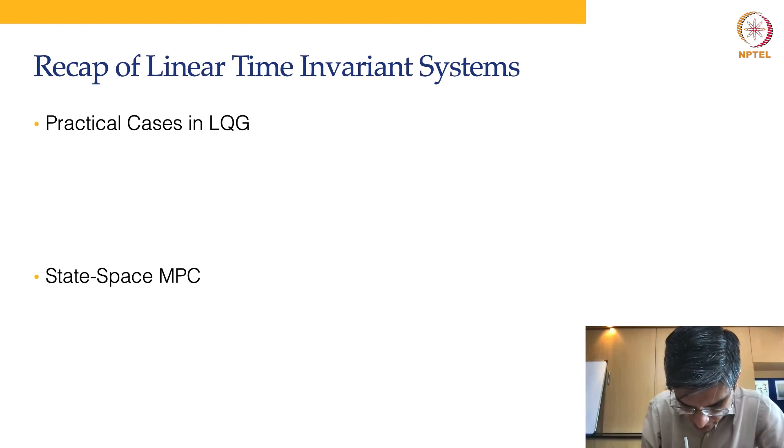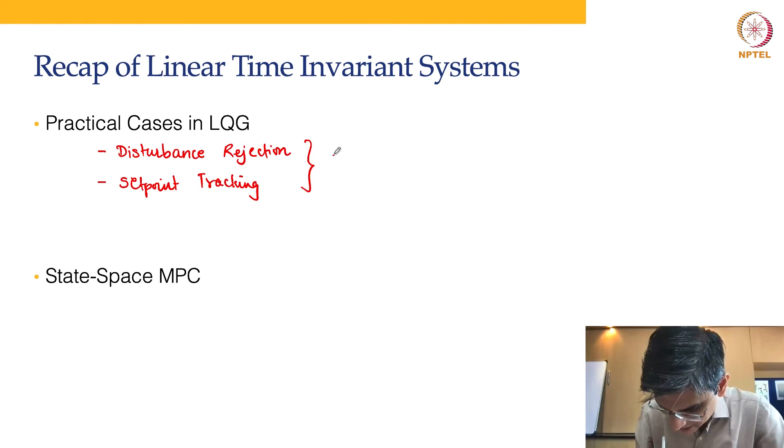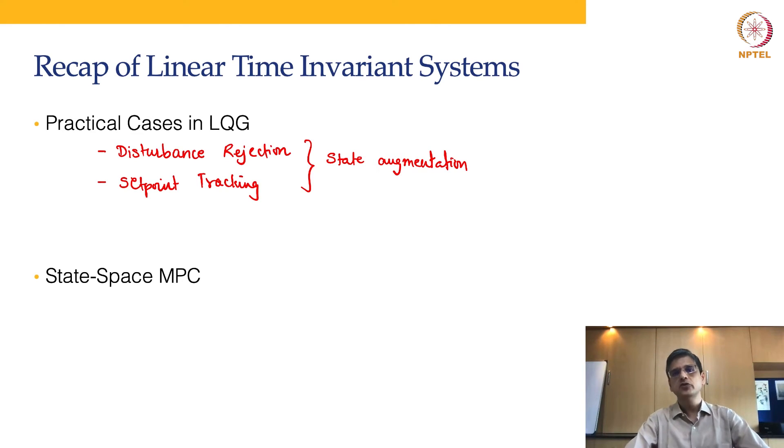Week number ten—the first lecture we introduced you to LQG—but thereafter we spent time talking about practical cases in LQG. For example, if there is a disturbance or if we need to track a set point. In either case, you require an appropriate state augmentation in order to do the LQG. Again, LQG solves a regulatory problem, which means you can take the system from any arbitrary point to the origin. If you have a set point tracking problem, you reformulate it in these terms.